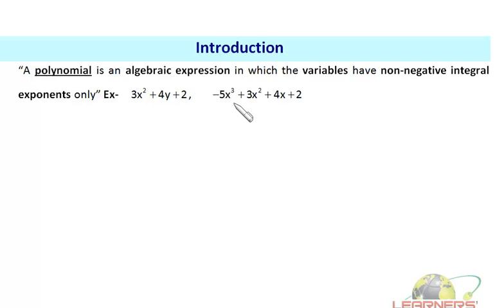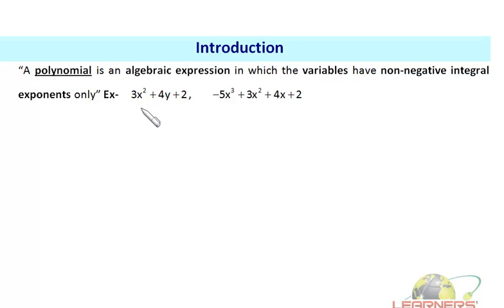Similarly, −5x³ + 3x² + 4x + 2 is also an algebraic expression — a combination of variables and constants connected by mathematical operators like addition, subtraction, multiplication, and division.